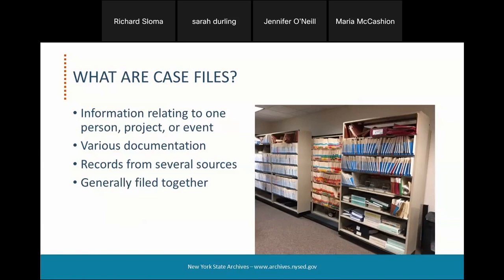So what are case files? They're compiled information relating to a specific person, or a project or an event. They contain different kinds of records from many sources that are created or received by the organization, and the records often have different retention periods, including what we call event-based retention. Event-based retention means something has to happen before the records retention period begins — for example, a person leaves the organization, or a project ends, or a case closes — and then a six-year or other retention period begins.